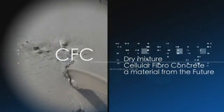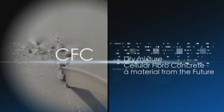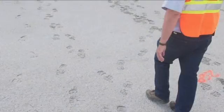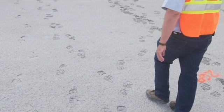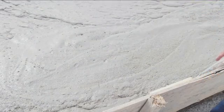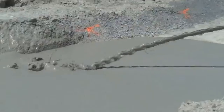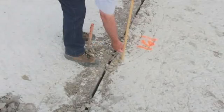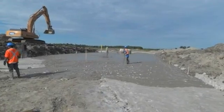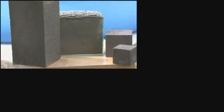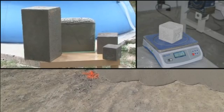Dry Mixture Cellular Fibro Concrete — a material from the future. Cellular concrete is a lightweight, cement-based material containing many gas bubbles, evenly distributed and representing more than 20% of the whole volume of the material. Compared with traditional concrete, cellular or porous concrete is considerably lighter.